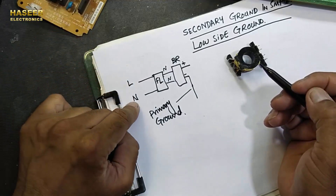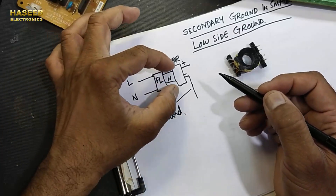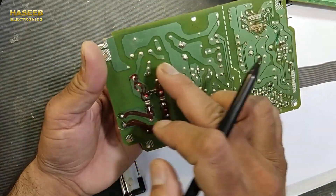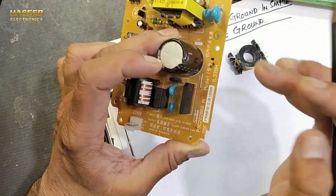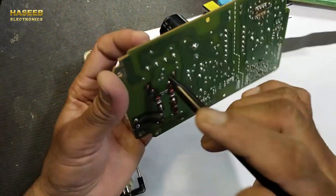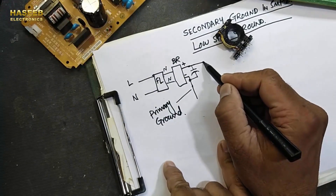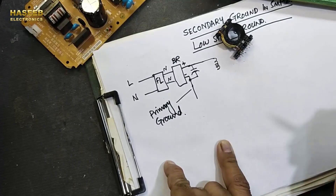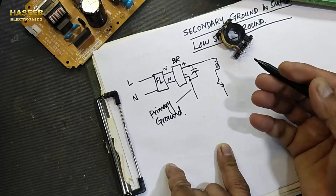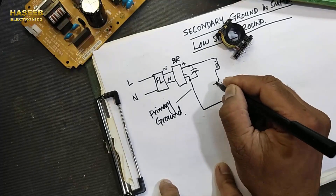There is also another ground — the neutral — which is connected to the earth point. But in the circuit, after passing through the bridge rectifier and connecting to the capacitor, we have our primary ground. The positive voltage reaches the capacitor through a jumper, and the negative side is connected from that point to the capacitor. So we have one ground here. This voltage then goes to the transformer.